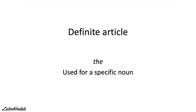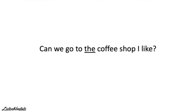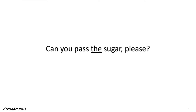Let's have a closer look. The definite article the is used to refer to a specific person or thing. For example, I like looking at the moon — moon is specific, there is only one. Can we go to the coffee shop I like? We don't mean any coffee shop; we mean a specific one. We can also use the definite article the with uncountable nouns. For example, can you pass the sugar, please?